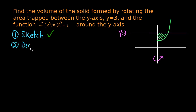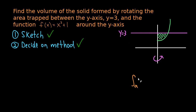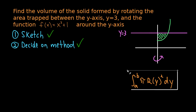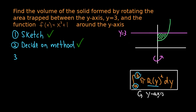Step 2 is to decide on a method — we'll use the disk method. This will become very important later when we learn the washer and shell methods and have harder problems to set up from scratch. I highly recommend you write down the formula for the method you're about to use. The disk method formula for rotating around the y-axis — or any vertical line parallel to the y-axis — is this integral. We have bounds a and b and a radius function r(y), and once we find those things we can plug in and solve.